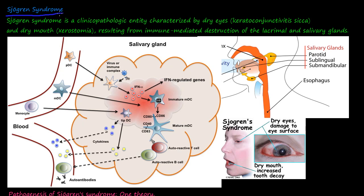Sjögren's Syndrome is a clinical pathological entity characterized by dry eyes, also called keratoconjunctivitis sicca, and dry mouth, also called xerostomia.